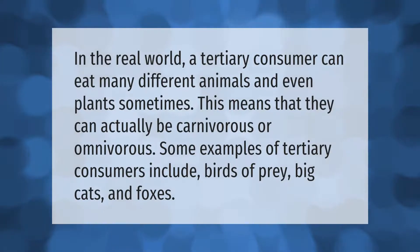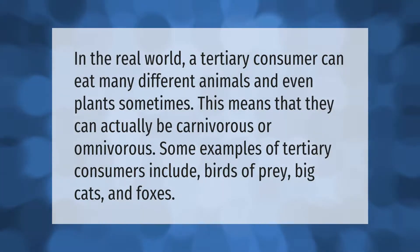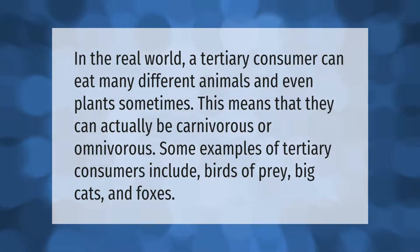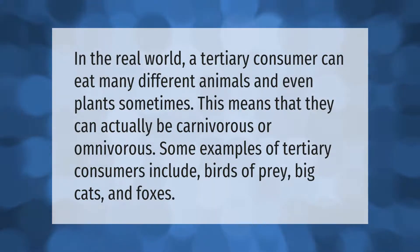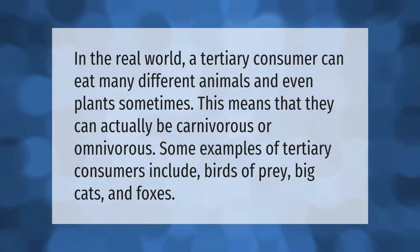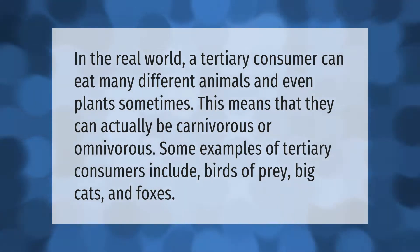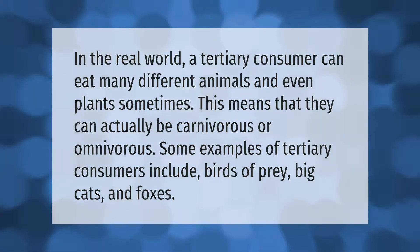In the real world, a tertiary consumer can eat many different animals and even plants sometimes. This means that they can actually be carnivorous or omnivorous. Some examples of tertiary consumers include birds of prey, big cats, and foxes.